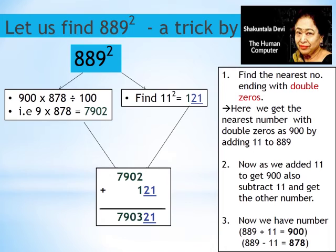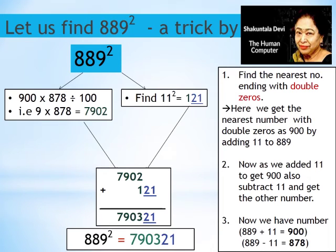Now we get the answer: the square of 889 is 790321.